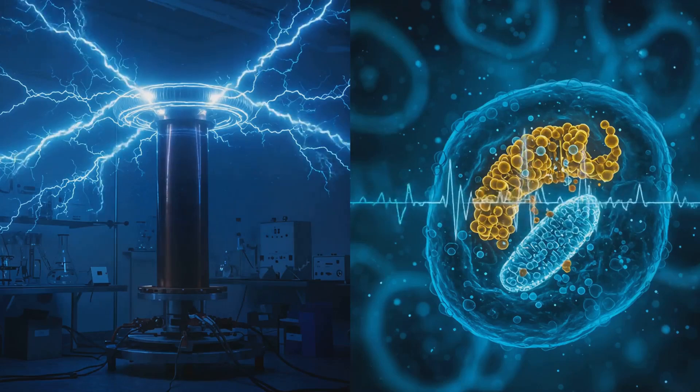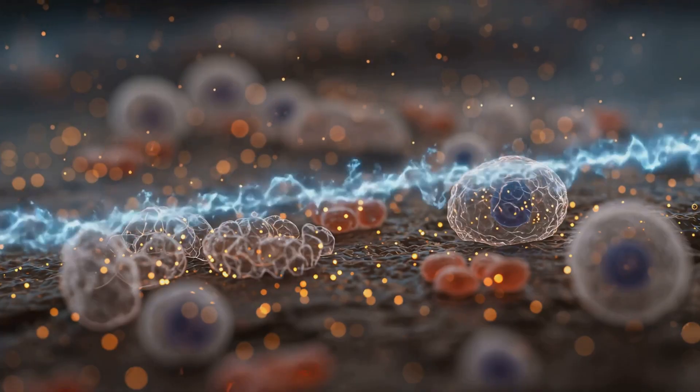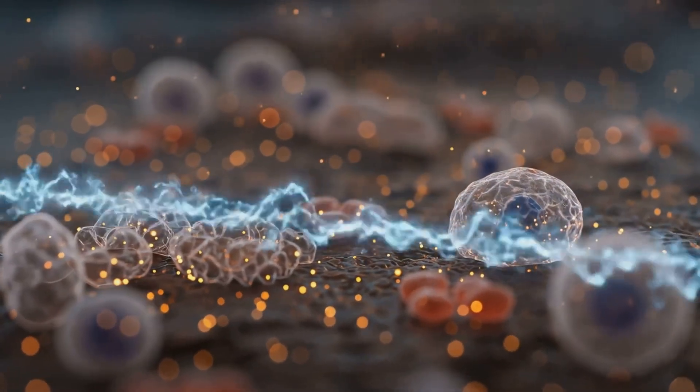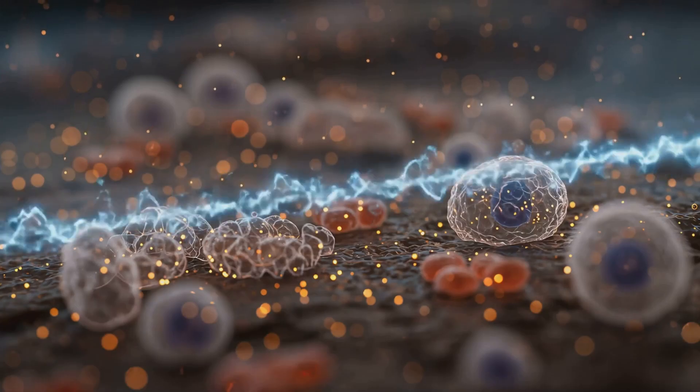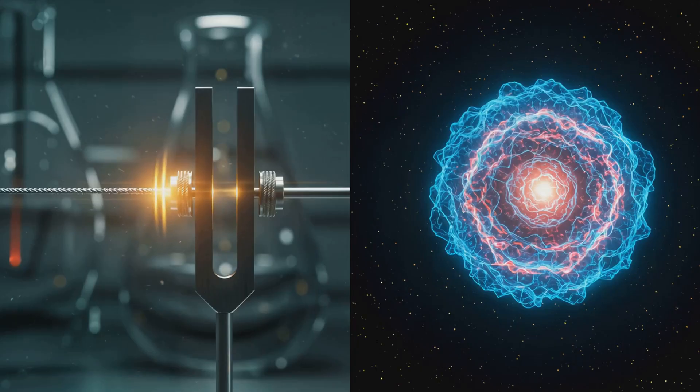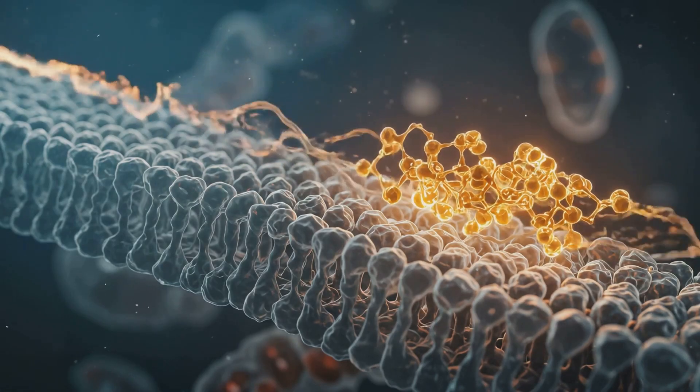It broadcasts energy at the same frequency that the proton naturally spins. When those frequencies align, the cell recognizes the signal. The protons begin to spin in sync. The ATP motor turns once more, and this time no food is needed. This Tesla coil skips digestion entirely. It gives the proton its rhythm directly, like striking a tuning fork near a string, and the cell responds, Yes, this is my frequency, I remember.